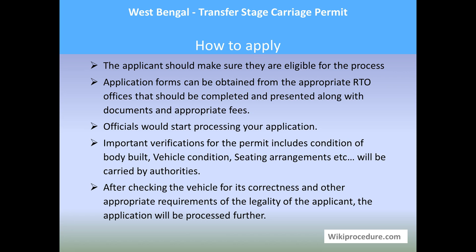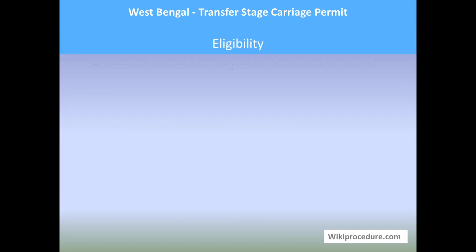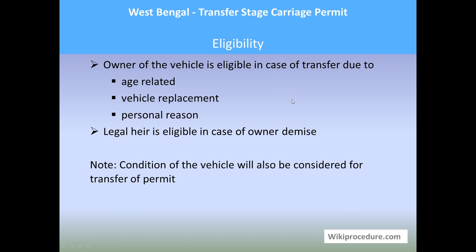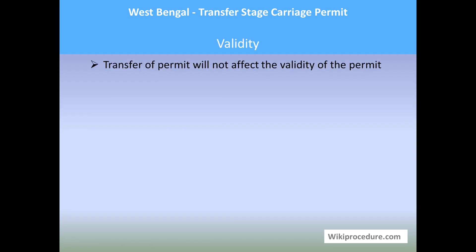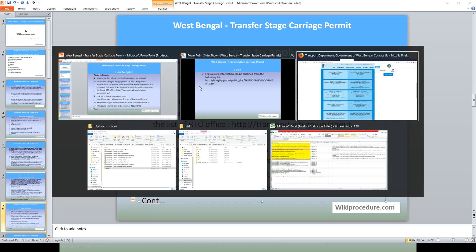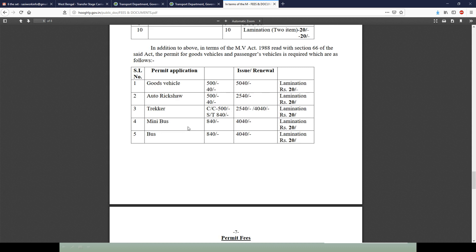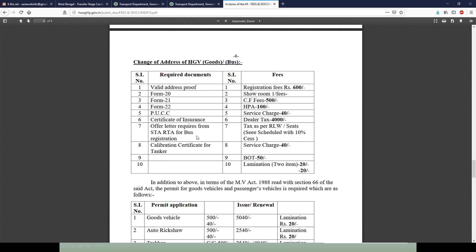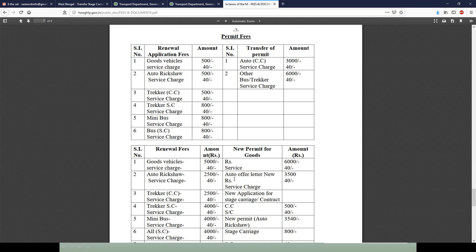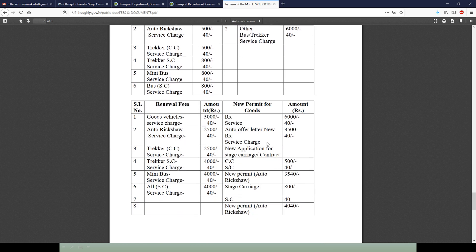They will check the vehicle condition, body build, seating arrangements, and other infrastructure requirements, along with the legality of the applicant, before processing the application further. Eligibility: the owner of the vehicle is eligible in case of transfer due to age-related vehicle replacement or personal reasons; the legal heir is eligible in case of owner demise. The condition of the vehicle will also be considered. Validity: transfer of permit will not affect the validity of the permit. Fees: use the link to the West Bengal State portal to ascertain the applicable fees before visiting the RTO.